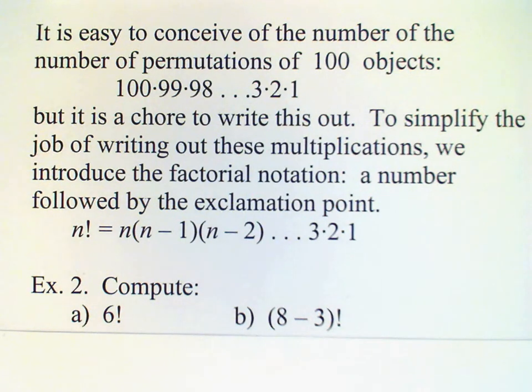Next example on the note says 8 minus 3 factorial. Of course, when we have the parentheses, that indicates that we need to perform the operation in parentheses first. So we do 8 minus 3, that gives us 5. And then 5 factorial, 5 times 4 times 3 times 2 times 1, which gives us 120.